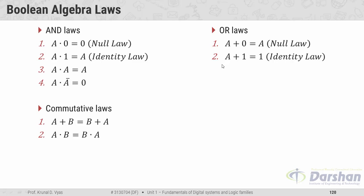The third OR law is: A OR A is always A — zero OR zero is zero, and one OR one is one. The fourth is: A OR A-bar is always 1. Taking zero as input: zero OR one (the complement of zero) is one, and one OR zero is one.